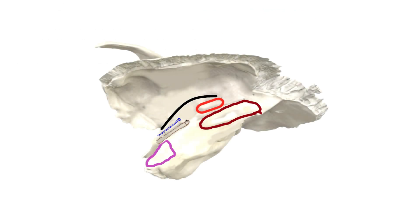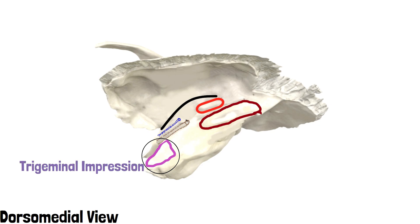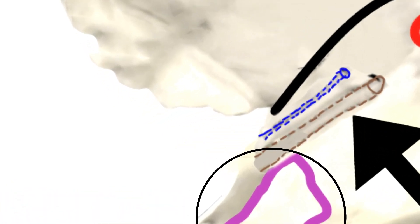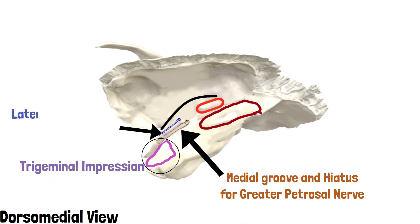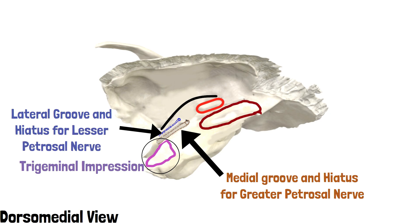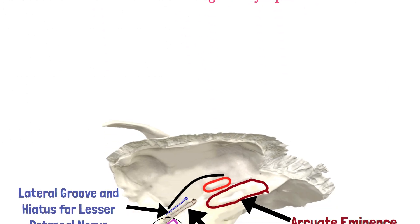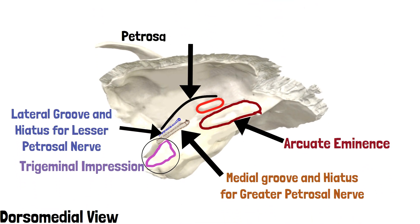This is the dorsomedial view of the bone. This triangular area outlined in purple is the trigeminal impression for the ganglion of the trigeminal nerve. This light brown outlined groove lateral to the trigeminal impression is the medial groove and hiatus for the greater petrosal nerve. This blue shaded groove is the lateral groove and hiatus for the lesser petrosal nerve. Lateral to this hiatus, the arcuate eminence is present, outlined in dark brown. The black outlined part is the petrosquamous fissure, and this area between the petrosquamous fissure and the arcuate eminence is the tegmen tympani.